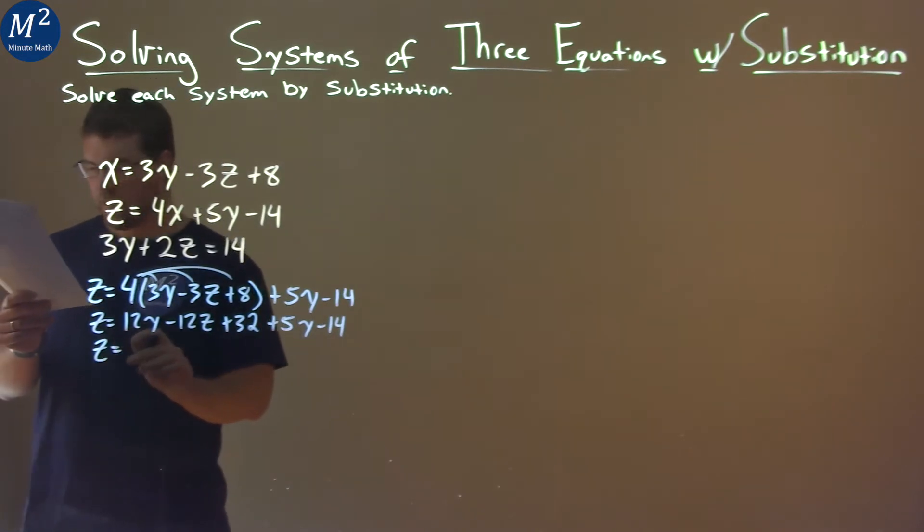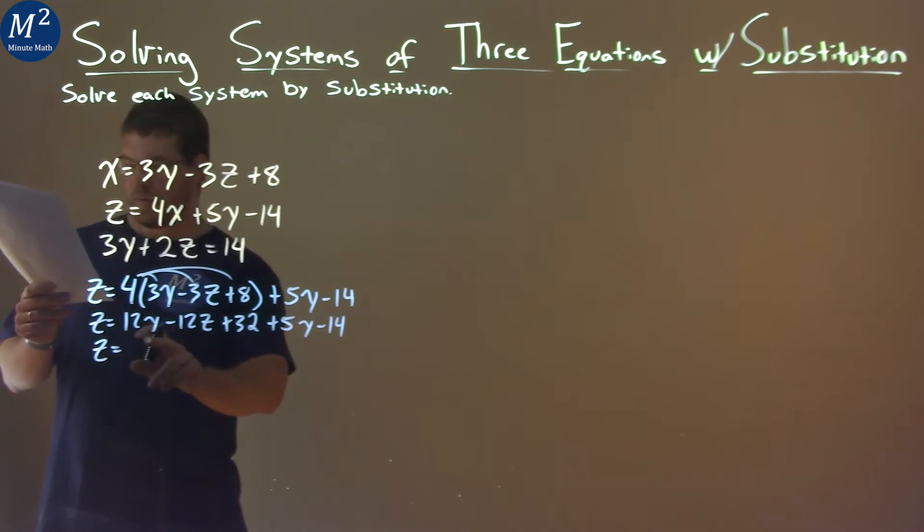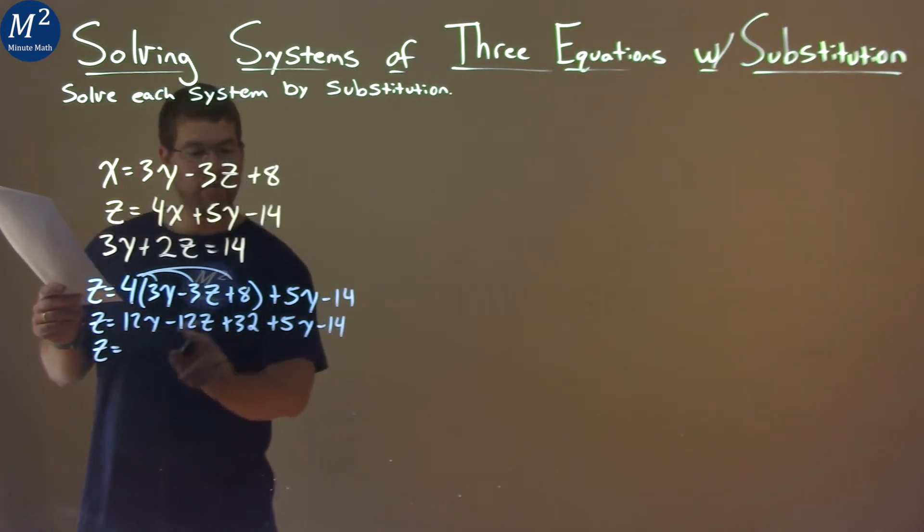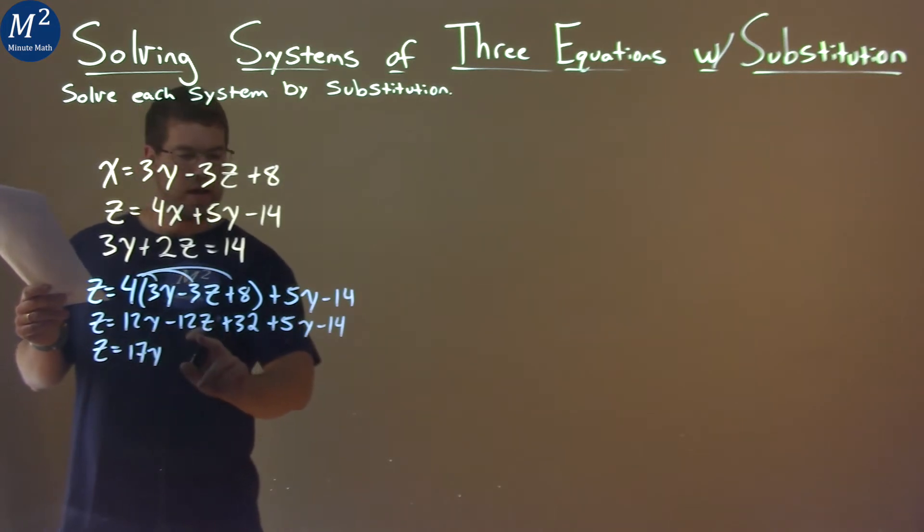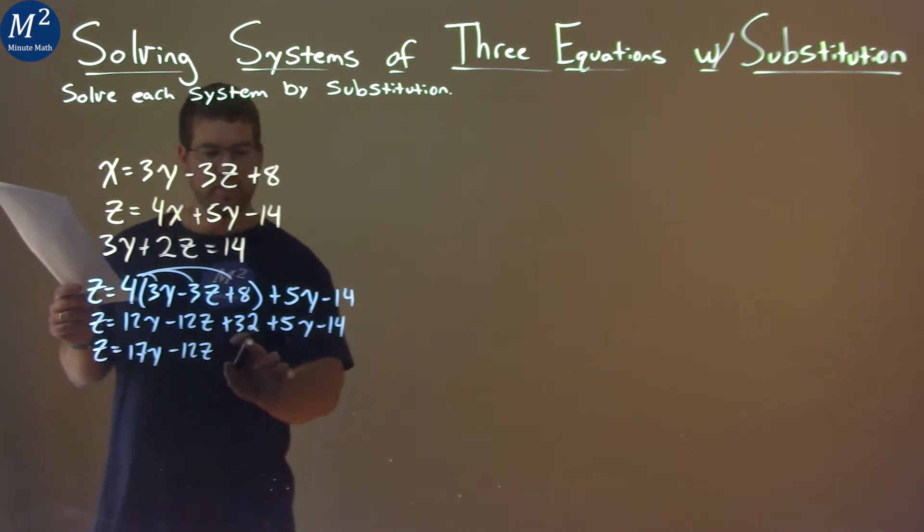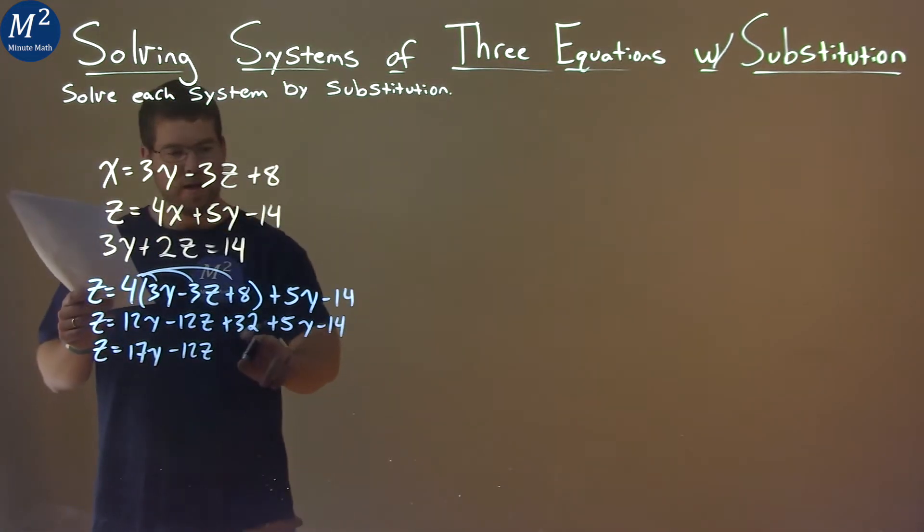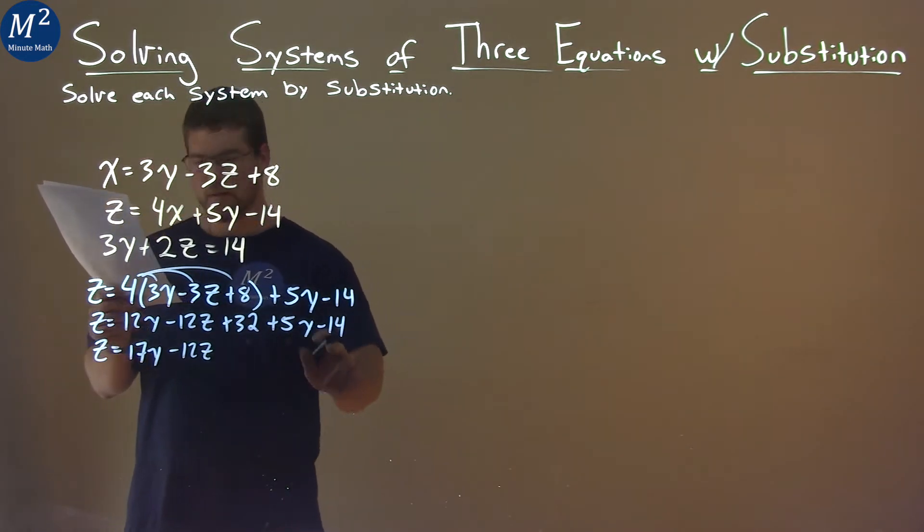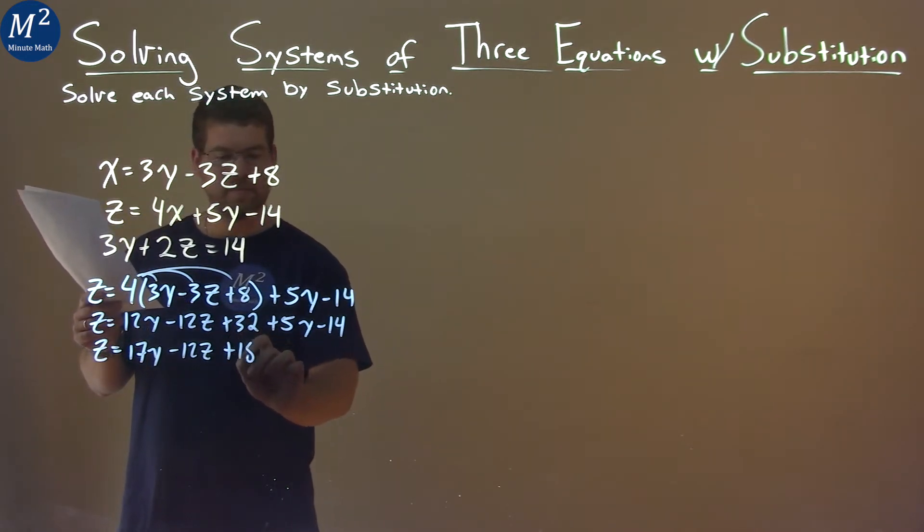So z by itself here, and we have, well, what can we combine here? We have 12y and a 5y, 12y and 5y give us a 17y. And negative 12z is the only z one on this side, so let's keep that here, negative 12z. And last, we have our numbers, 32 and minus 14, and that comes out to be an 18.